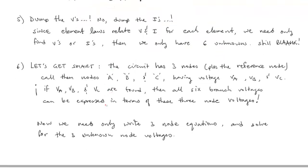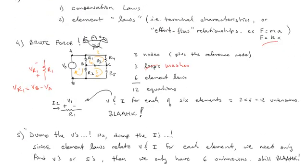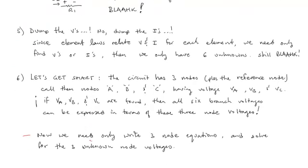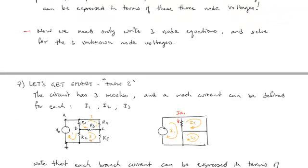So now we need only write three node equations and solve for the three unknown node voltages. Now, granted, we still don't know the currents. So before we can calculate the currents through each of these branches, we're going to have to determine the branch voltages, like VR1, VR4, VR3. And then we're going to have to use Ohm's Law, the element law, to calculate the current. But see how we've kind of separated that? We haven't thrown everything in one pot and said we've got 12 equations and 12 unknowns. We would be making way too much work for ourselves. So this is comforting. We only need to do a three, solve a system of three equations.